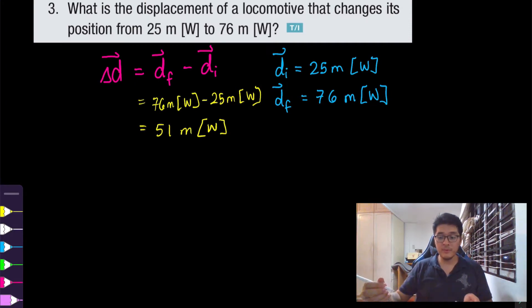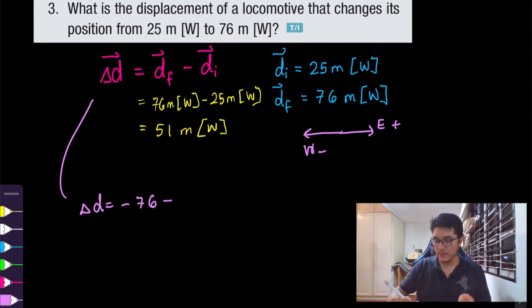Now there is another way to do this, which is if we indicate the east direction is positive and the west direction is negative. So this is how we can write this instead. 76 meters west can be written as negative 76 minus—and 25 meters west can be written as negative 25. So negative 76 plus 25 will be negative 51. But the negative just represents the west direction, so you can rewrite this as 51 meters west.